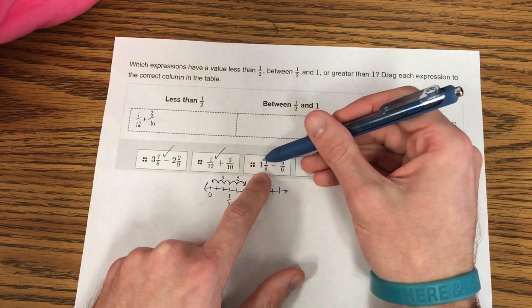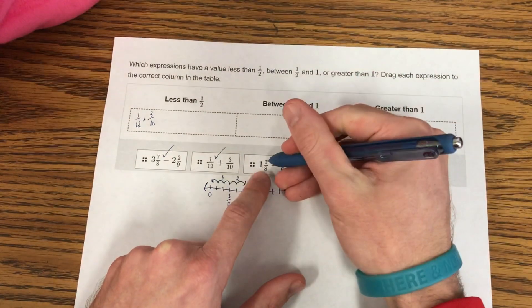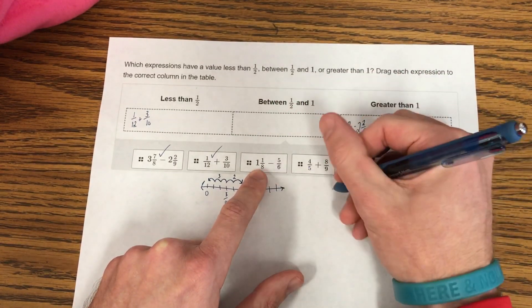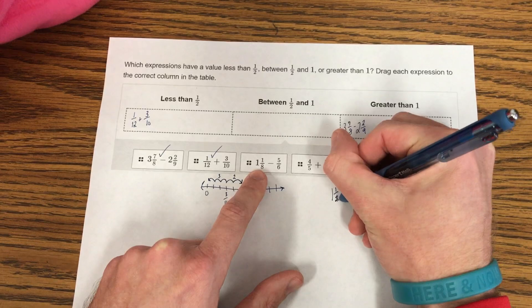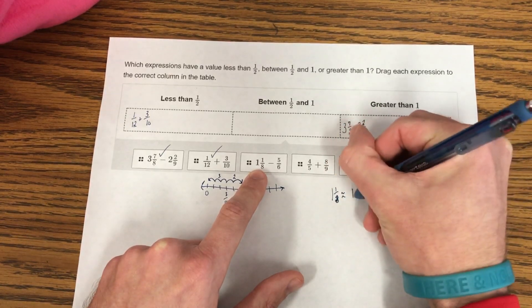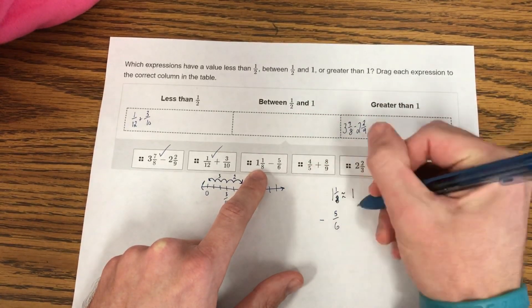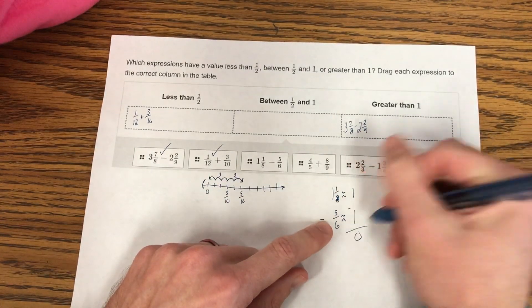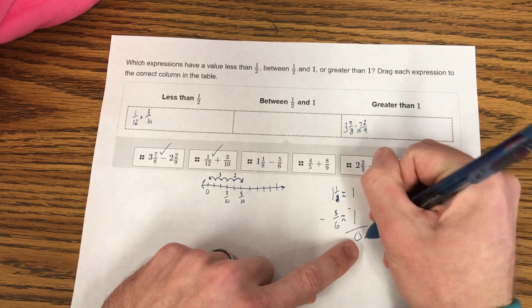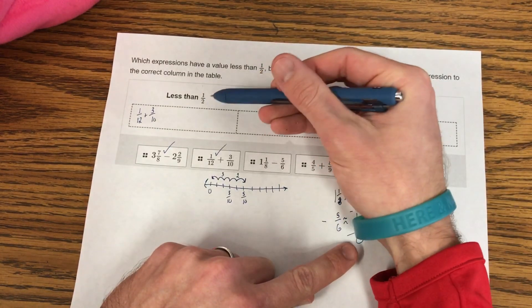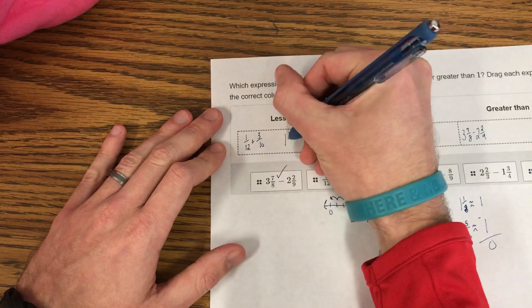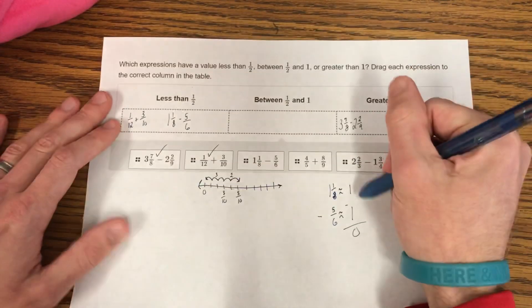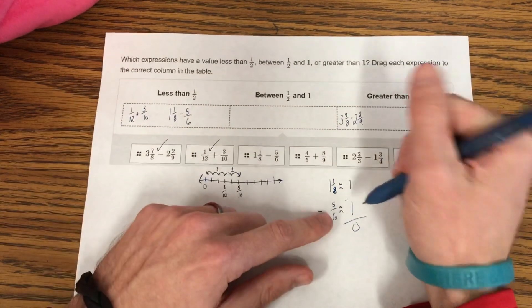Let's take a look at this one: 1 and 1/8 minus 5/6. Well, I know 1/8 is really close to 0/8. So I'm going to round 1 and 1/8 to 1. And if I'm going to subtract 5/6, well, that's really close to 1 as well. Well, 1 minus 1 is 0. So that difference is less than 1/2. So this one is also going to go over here, 1 and 1/8 minus 5/6, because they're both so close to 1 that there's no way their difference can be between 1 and 1/2 or greater than 1.